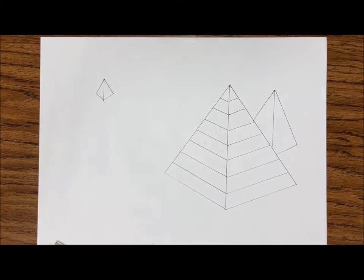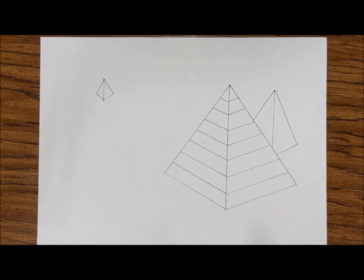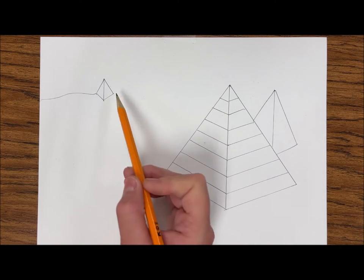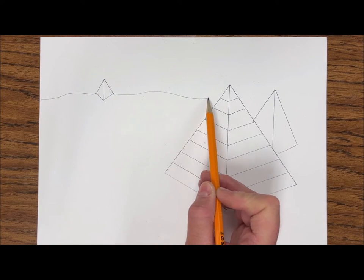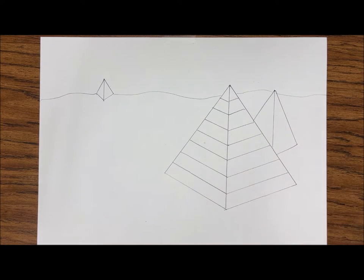All right, now that I have my pyramids, I need to add a horizon line, which is where the sky meets the ground. So I'm going to make a wavy line to represent the sand dunes that we often see in Egypt around these pyramids, and then I'm going to also create some wavy lines for sand dunes surrounding my pyramids to fill in the space here.